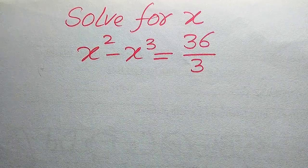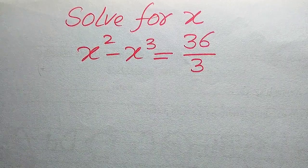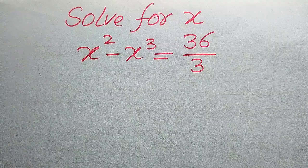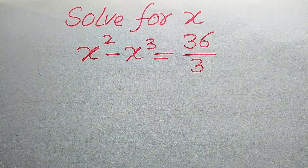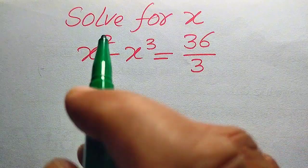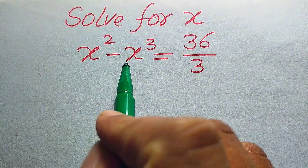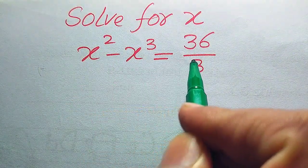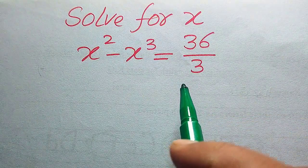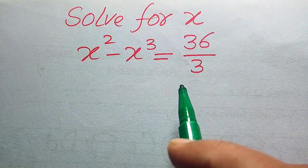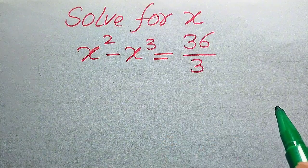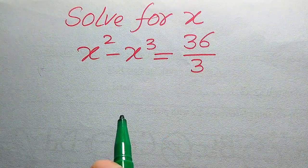Hello everyone, welcome back to my channel. Today we are talking about a math problem inspired by Harvard University entrance exam level questions. The equation we are looking at is X squared minus X cubed equals 36 divided by 3. At first it looks simple, but once you start solving it, you realize how quickly it tests your understanding of algebra.